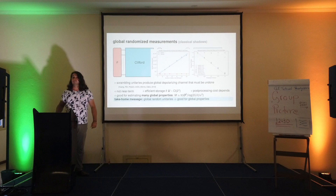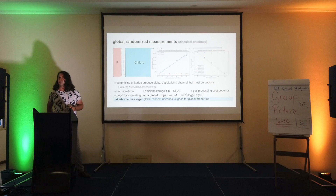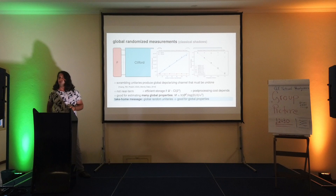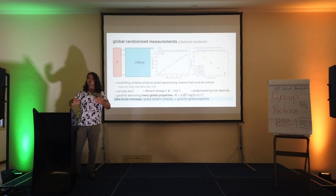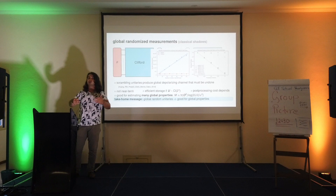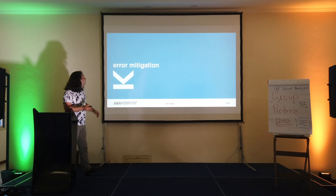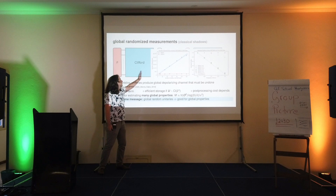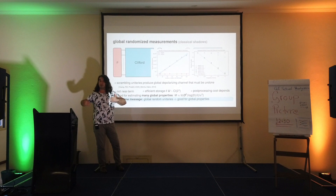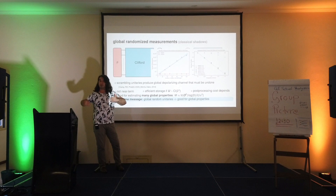Now it's everybody's game. I showed the nice story for local measurements and global measurements. We can all think about estimation schemes that represent the symmetry or structure of the objects we care about. One obvious way to interpolate between local and global is to look at random circuits of intermediate depth — shallow circuits. This would interpolate between local and global randomized measurements by taking random circuits of increasing depth. This is something very active in the community right now.